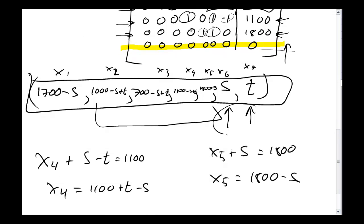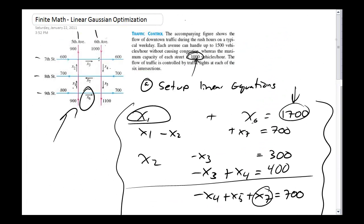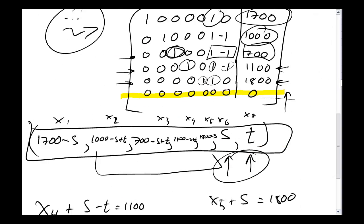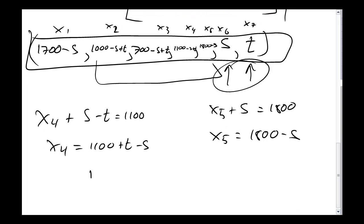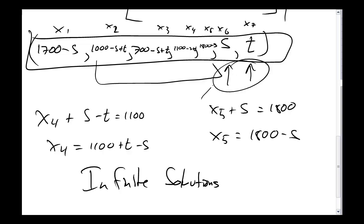This is the final answer in terms of what traffic patterns are reasonable. You don't expect a single traffic pattern every day in the city, and this solution confirms it — s and t can take different values on different days, as long as they stay under the 1000-vehicle capacity on those streets. This gives me infinite solutions, meaning I can vary s and t freely, and once chosen, all other traffic variables are forced to specific values to keep the flow of traffic moving.